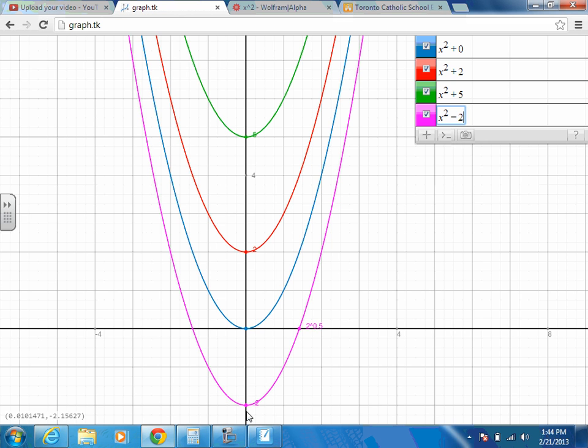The vertex has gone down two units. In other words, the K value is going to move us in a positive direction if it is positive, and it's going to move us in a negative direction if it is negative.